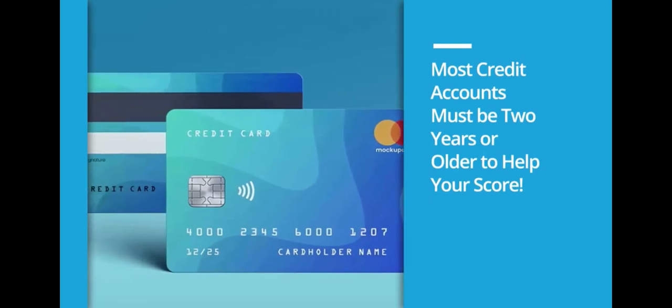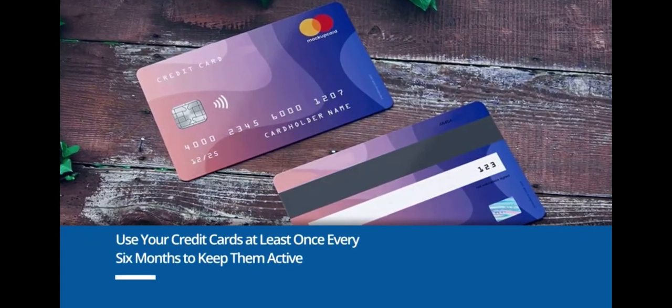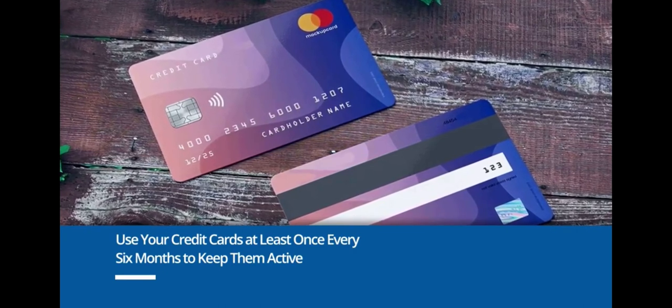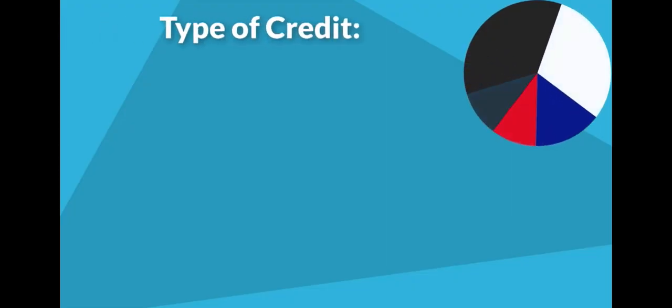If you have older credit cards that you don't use frequently, try to use them at least once every 6 months to keep them active by making a small purchase and paying it off. The next factor is type of credit, which makes up about 10% of your score.